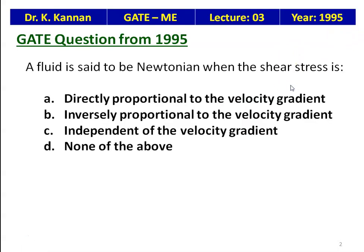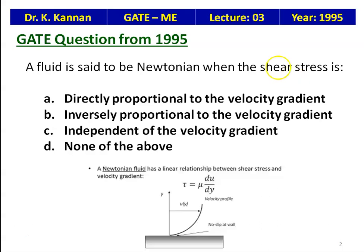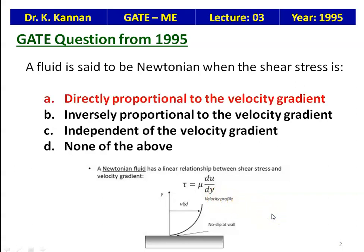The first question: a fluid is said to be Newtonian when the shear stress is — A: directly proportional to the velocity gradient, B: inversely proportional, C: independent of the velocity gradient, or D: none of the above. A Newtonian fluid has a linear relationship between shear stress and velocity gradient: τ = μ(du/dy), so the shear stress is directly proportional to the velocity gradient. The correct answer is A.